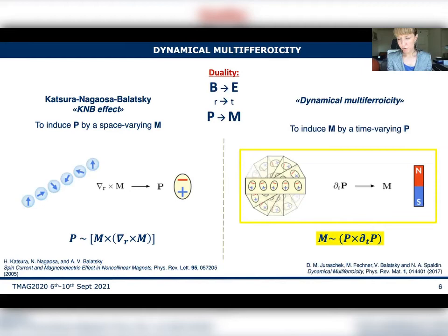So the possibility to induce a magnetic moment by means of a time-varying polarization. And the magnetic moment would have the form of p cross the time derivative of p, so you now understand why the circular motion is important, because it would maximize such a product.